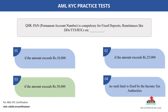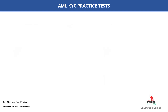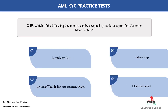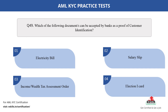Question number 49. Which of the following documents can be accepted by banks as a proof of customer identification? The options are: A. Electricity bill; B. Salary slip; C. Income or wealth tax assessment order; D. Election ID card. The correct answer is option D.